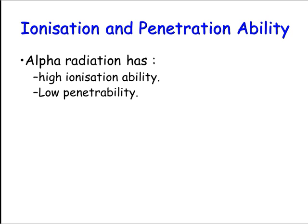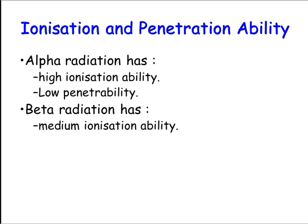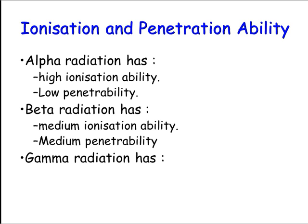For beta radiation — it has a negative charge, which is repelled by electrons, but it's also moving with high energy so there are going to be collisions, just less than with alpha radiation. So we'd say it has more like a medium ionisation ability, and as a result, because it's undergoing less ionisations per centimetre, it's going to penetrate much further.